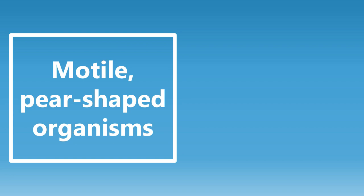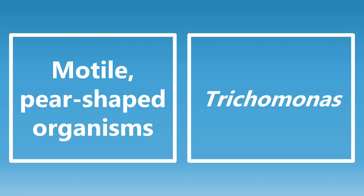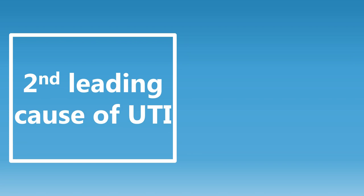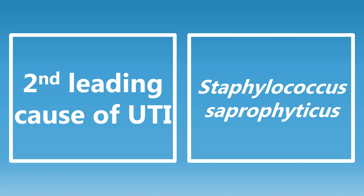Motile pear-shaped organisms — this is going to be the buzzword for Trichomonas. That's the description of Trichomonas, so you want to know the shape of that organism. Second leading cause of UTI: most of us know the first leading cause, the most common cause of a UTI, is E. coli, but we also want to know the second leading cause, and that's going to be Staphylococcus saprophyticus. Really important to know that.